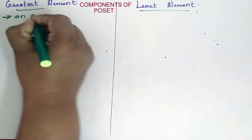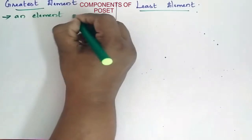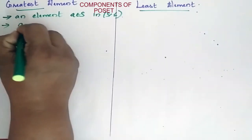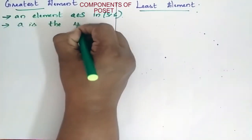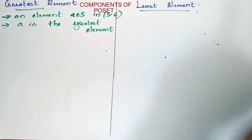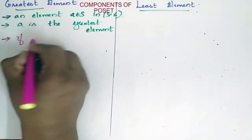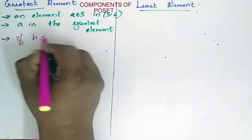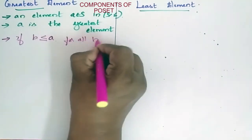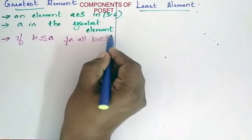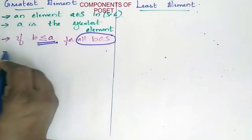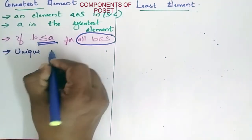Greatest element: an element A belongs to S in relation S. A is the greatest element when, for all B's that belong to S, your A should be greater and B should be smaller. This is the unique element you should get.